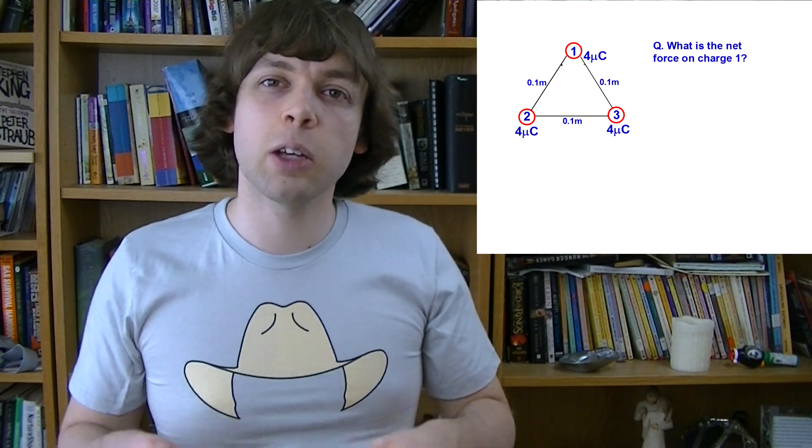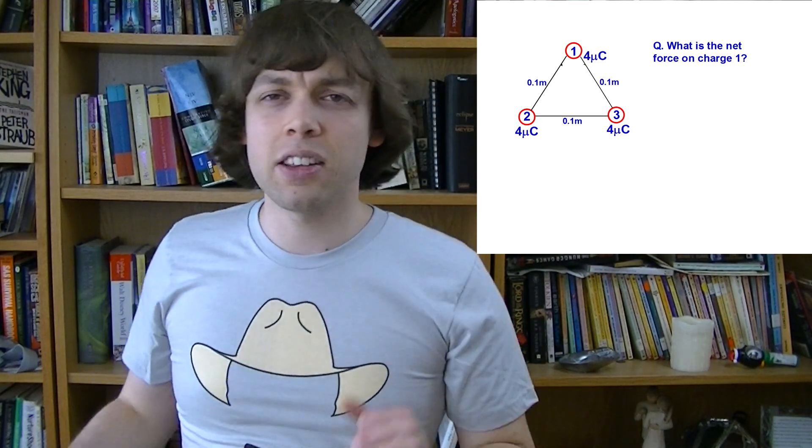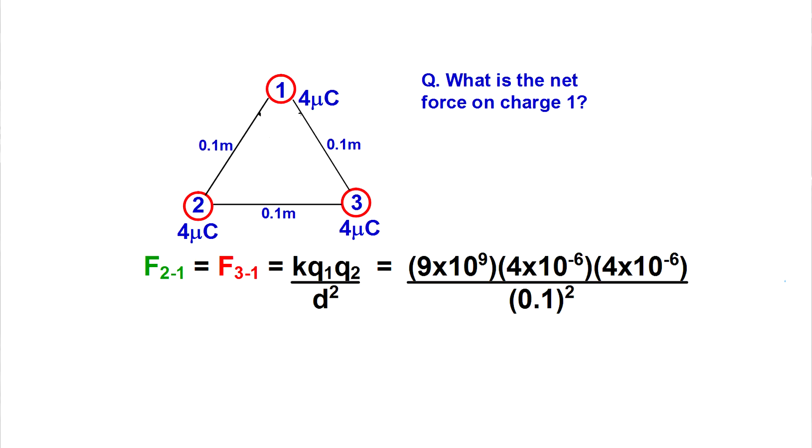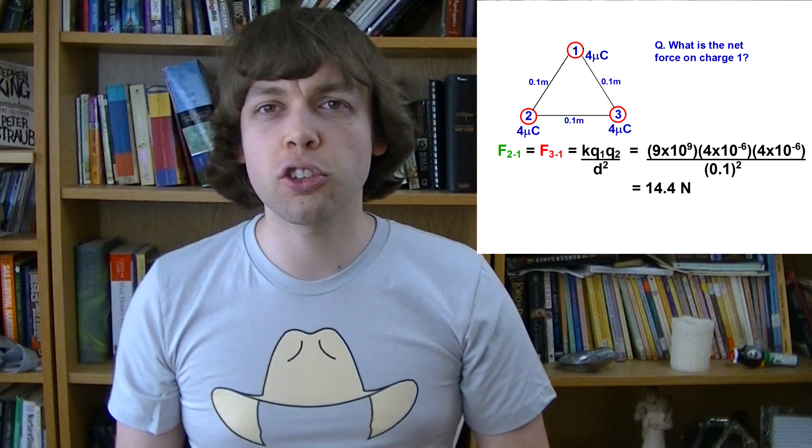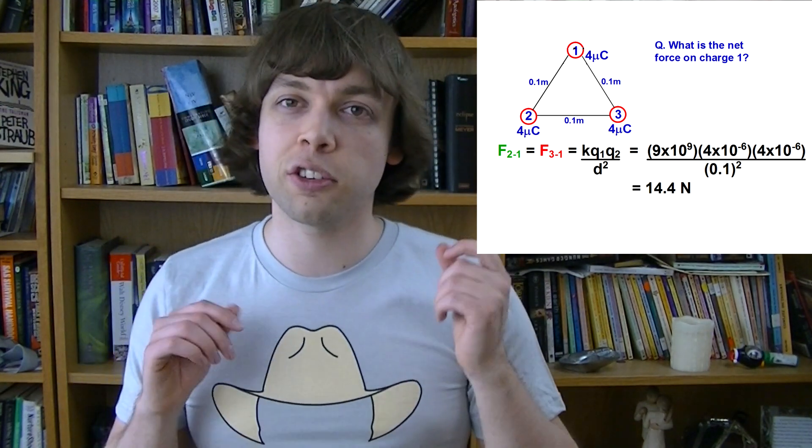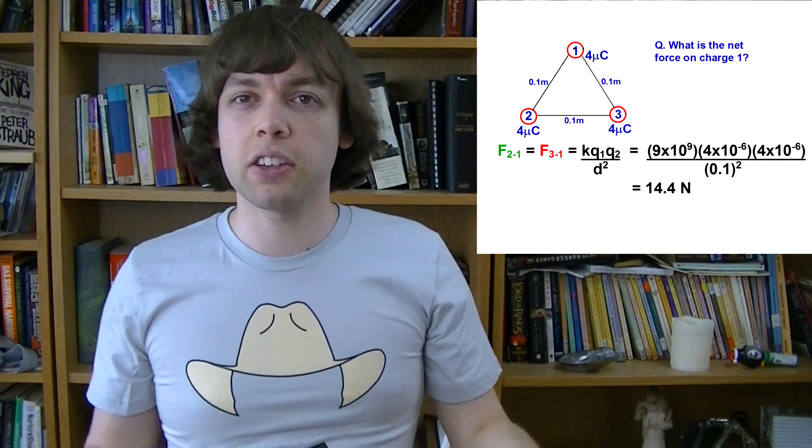But that's too easy, let's make it harder. We can add another dimension. Let's make this a two-dimensional problem with charges arranged in a triangle. The first step to solving this problem is exactly the same as before. We need to figure out the force that charge 1 feels due to charge 2, and separately the force that charge 1 feels due to charge 3. The force between charges 1 and 2 comes out as 14.4 newtons. The force between charges 1 and 3 is also 14.4 newtons. That's because these two charges are the same size and the same distance apart, so it's exactly the same calculation.